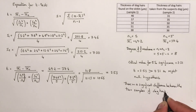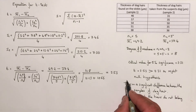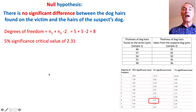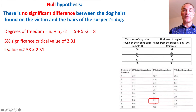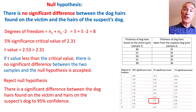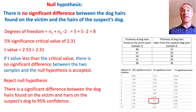We're 95 percent confident that the hairs do not belong to the same dog. To recap: degrees of freedom were eight, the five percent critical value is 2.31, and our t value was 2.53 — greater than 2.31 — so we reject the null hypothesis. Our new conclusion is: there is a significant difference between the dog hairs found on the victim and the hairs of the suspect's dog, and we're 95 percent confident.